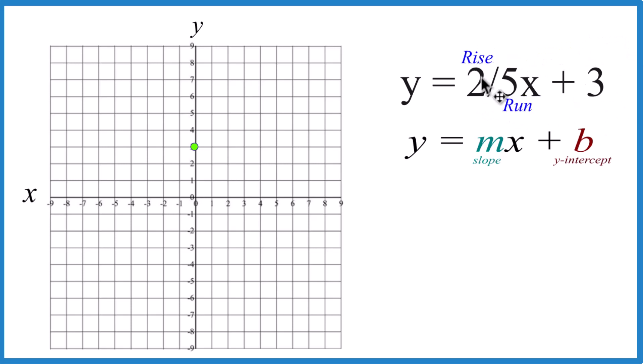It's a good way to think about it. So we rise two, run five, and we do that, we start at this y-intercept. Rise one, two, run one, two, three, four, five.